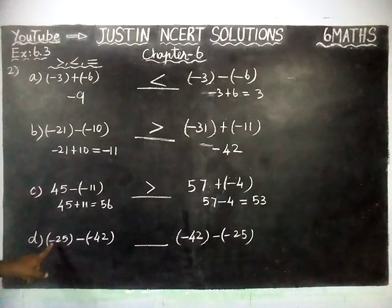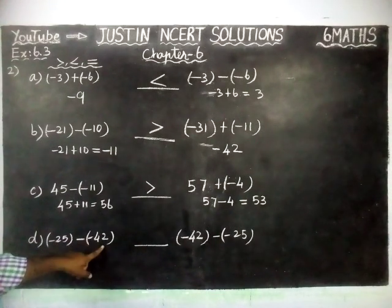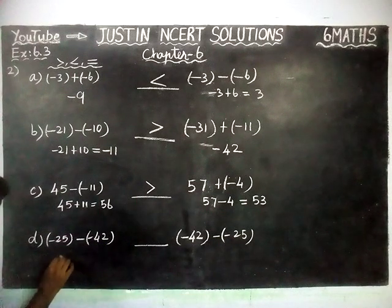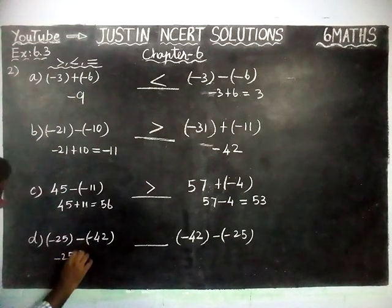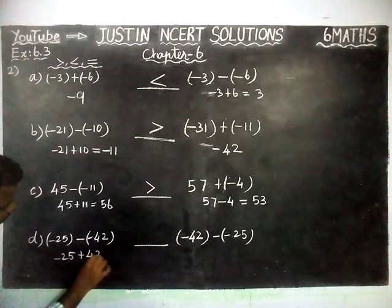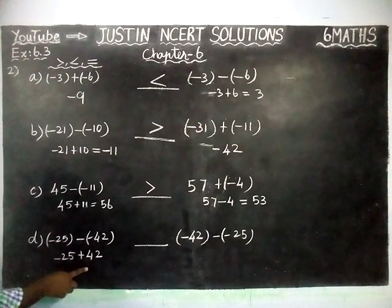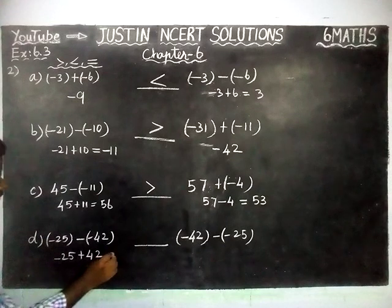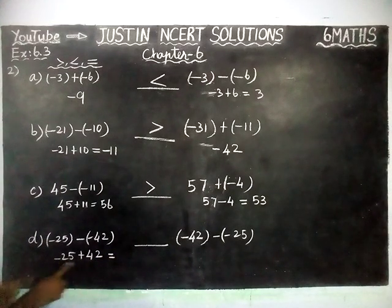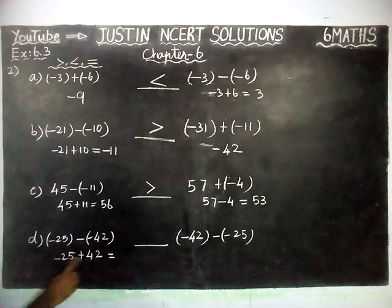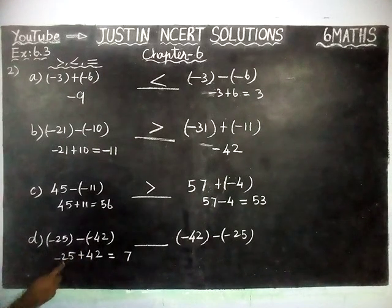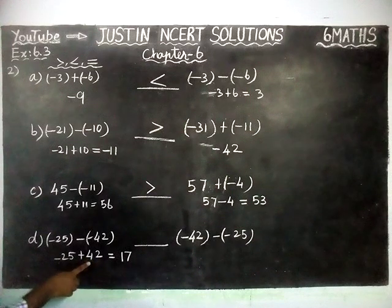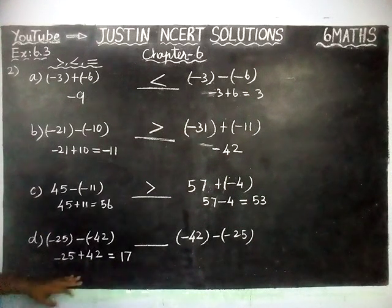Then, Part D: minus 25, minus of minus 42. Minus into minus is plus 42. Signs are different, so we find the difference: 42 minus 25. 2 minus 5 is not possible, so we borrow. 12 minus 5 is 7, then 3 minus 2 is 1. Since 42 is the greatest number and it has a plus sign, the left hand side answer is plus 17.